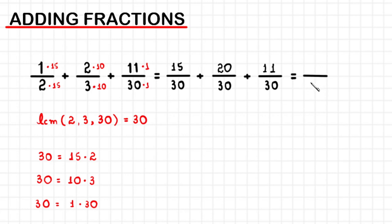Because in order to add fractions that have the same denominator, all you have to do is repeat the denominator, then you add the numerators. 15 plus 20 equals 35, and 35 plus 11 equals 46. 46 over 30 is one way to represent our final result.